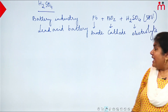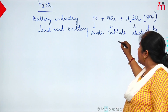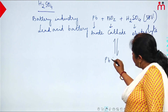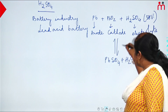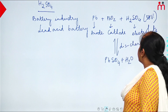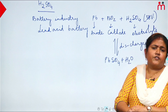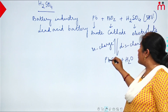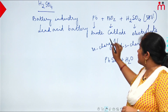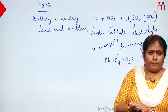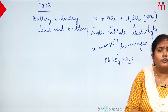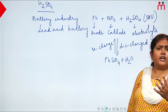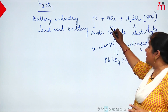In lead acid batteries, 38% concentration sulfuric acid is used as electrolyte. The cathode material, anode material, and electrolyte undergo a reversible reaction producing lead sulfate and water. When the battery is discharged, lead, lead oxide, and sulfuric acid react to form lead sulfate and water (forward reaction). When recharged, the backward reaction occurs.